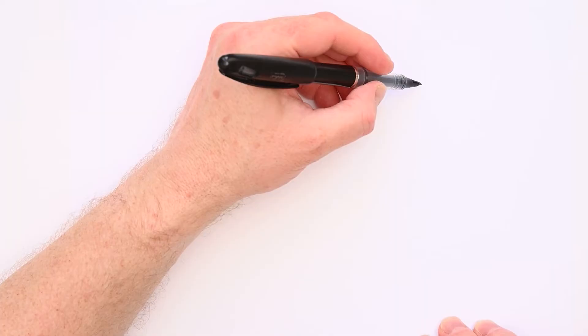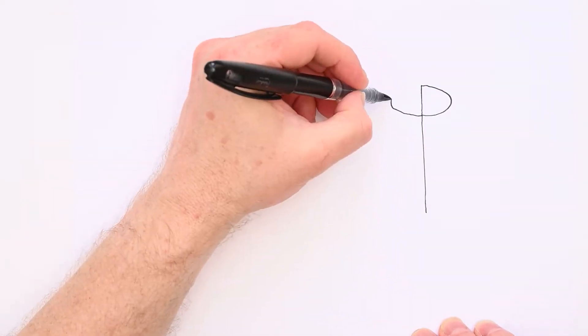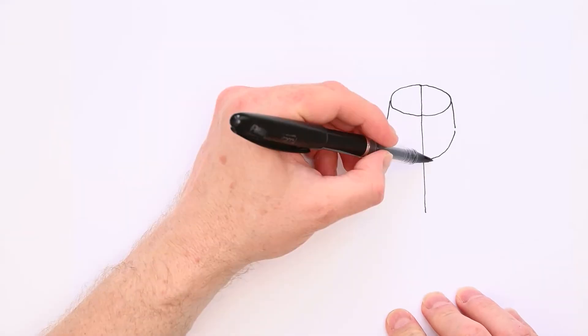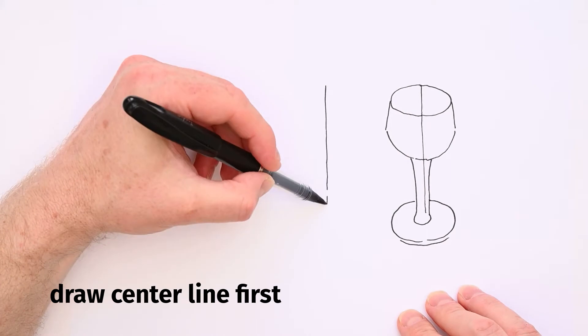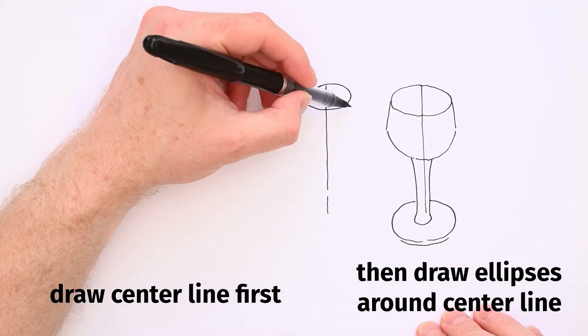So one great additional exercise is to look at actual cylindrically symmetric objects and to draw the cylinders you see and the ellipses you see. Draw the central line and then try to freehand draw the ellipses accurately and in perspective.